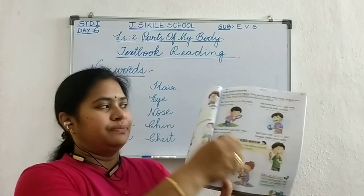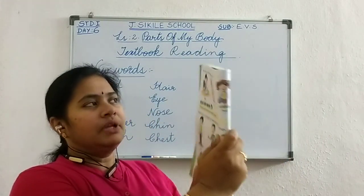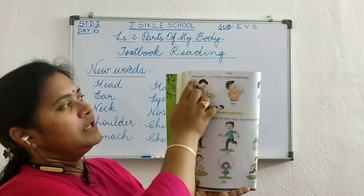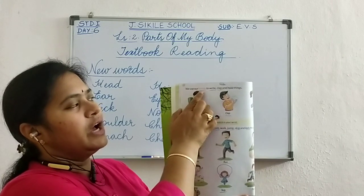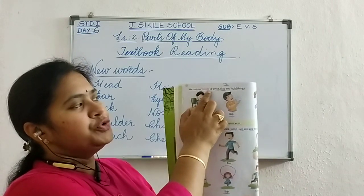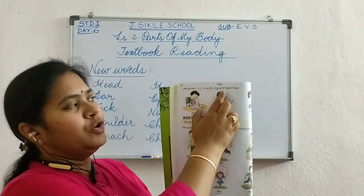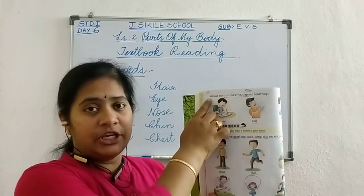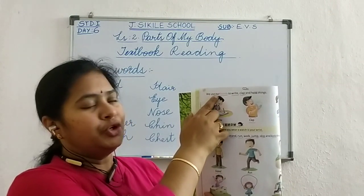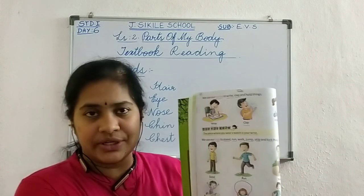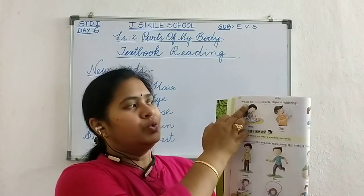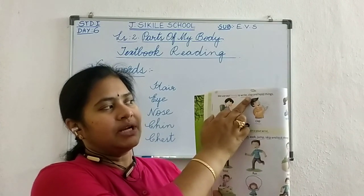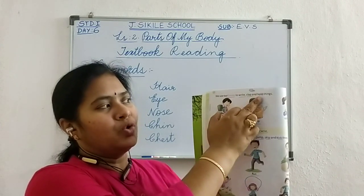Now turn the page. See page number 14. We use our hands to write, clap and hold things. You have to read like that. W-E. U-S-E. O-U-R. Our. These are all sight words. We use our hands to write, clap and hold things.